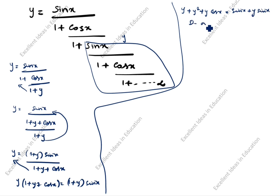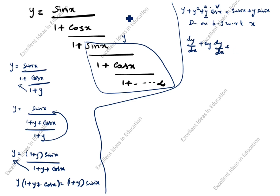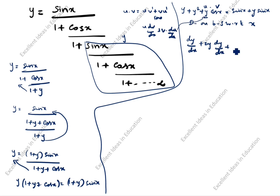Differentiating both sides with respect to x: dy/dx plus 2y·dy/dx plus — this is a product u·v. The formula is u·dv/dx plus v·du/dx. We split as per this formula: u is y, v is cos x, so we differentiate accordingly.